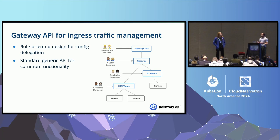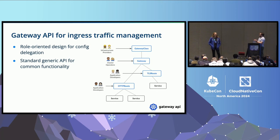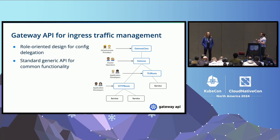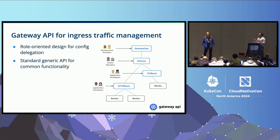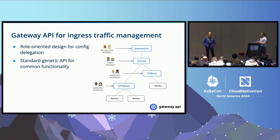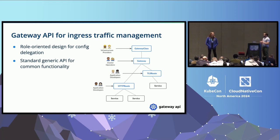Gateway API has a standard generic API for common functionality. Whereas Ingress v1 set out to be small and narrow scope, Gateway API has been actively engaging all of its implementations — we encourage them to come to the SIG, to the weekly meetings, to contribute and show what they're doing. If three or four implementations are trying to accomplish the same task, we actively want that to become upstream API. We have a path to do this through core, extended, and implementation-specific functionality, so it's a big tent for all implementations to share functionality that makes sense to share.